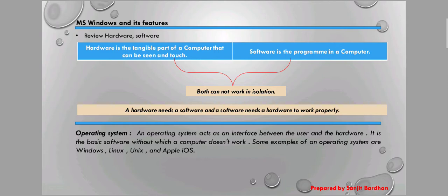That means we interact with the hardware via the operating system — we are unable to interact with the hardware directly. We need an operating system. Some examples of operating systems are Windows, Linux, Unix, and Apple iOS.